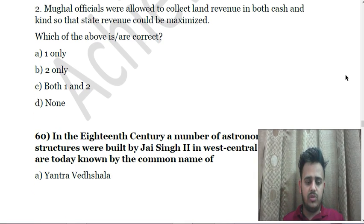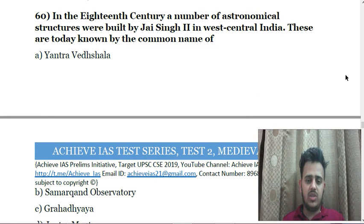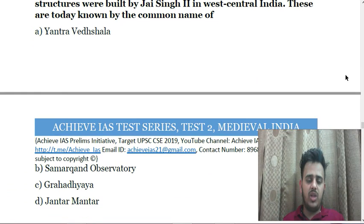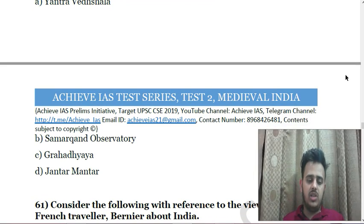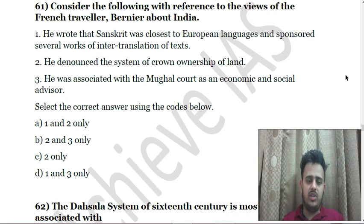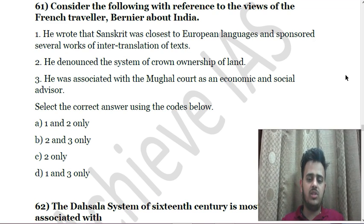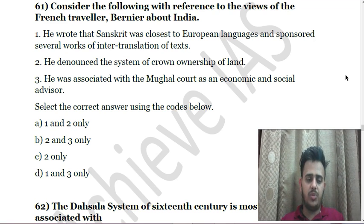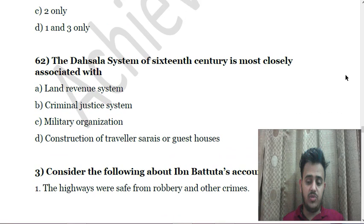Next: Consider the following statements in the context of medieval India and their correct matches — First, Jajmani system: art and craft production; Second, Mahajans: capital traders; Third, Milkiyat: private land of zamindars. Next: Consider the following with reference to Mughal India — First, the Mughal state fixed land revenue on the basis of quality and extent of the land; Second, Mughal officials were allowed to collect land revenue in both cash and kind so that state revenue could be maximized.